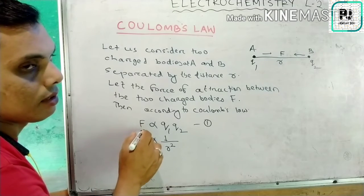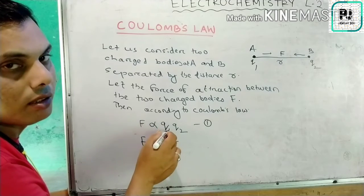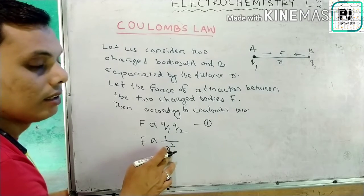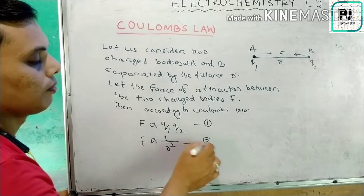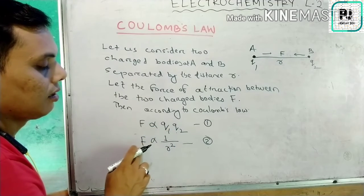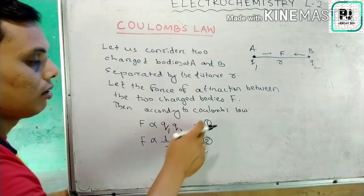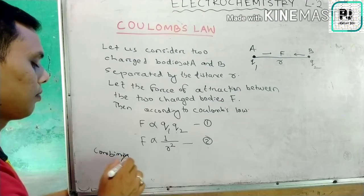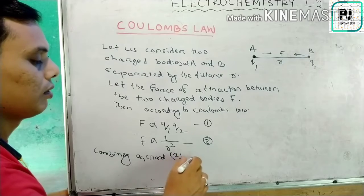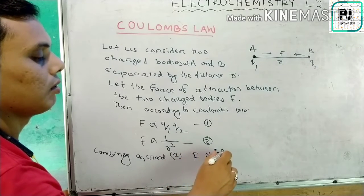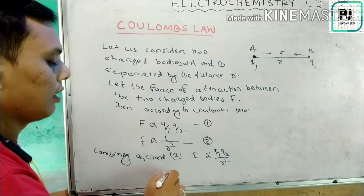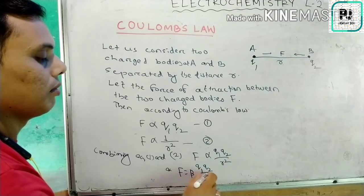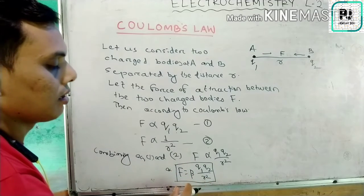If F decreases, the product of q1 and q2 also decreases. For inverse proportionality, if F increases then r decreases, and if r increases then F decreases. Combining equations one and two, we get F is proportional to q1 times q2 divided by r squared, or F equals beta times q1 times q2 divided by r squared. This is the derivation for Coulomb's Law.